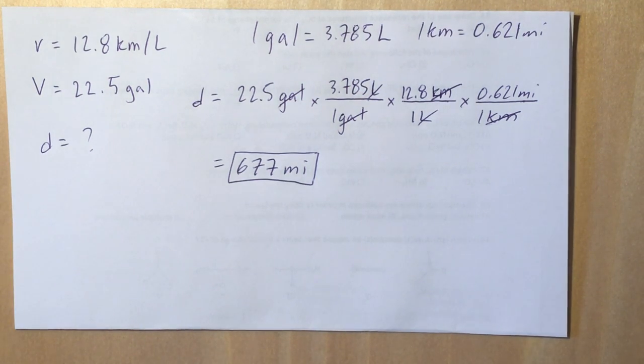One is given to you by the problem, the rate at which the fuel is burned, the 12.8 kilometers per liter. Hopefully by now you can look at that and say, I see that it can be used as a conversion factor. The other two are the gallons to liters and the kilometers to miles that I gave you up there.